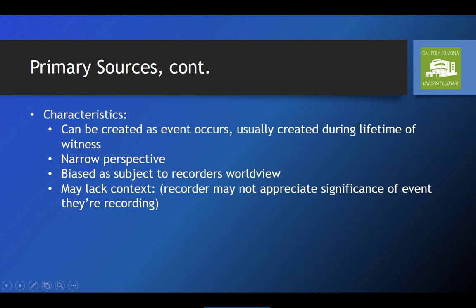Because they are first-hand accounts, primary sources tend to have a narrow perspective, focusing on a single individual's experiences and recollections. As such, they also tend to be biased, as they are subject to the recorder's prejudices and worldview. Finally, primary sources may lack context, as the recorder may not know how significant the event they're recording actually is. With some exceptions, it is usually only with hindsight that we realize whether or not an event is important.